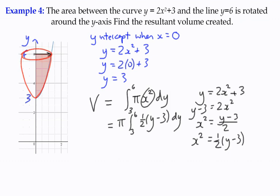Again, that half is multiplying. It's a constant term, so I would take that out and just deal with the integral of y minus 3, which would be y-squared over 2 minus 3y. From 3 to 6.